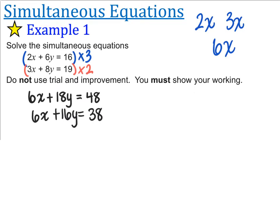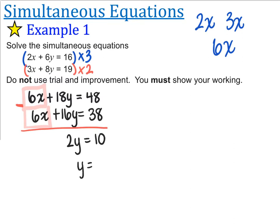Now I have 6x and 6x, and those two things are exactly the same. So I'm going to subtract the two equations. When I subtract them, 6x take away 6x is 0 — that's what I'm looking for. 18y take away 16y is 2y, and 48 take away 38 is 10. So 2y is equal to 10, so y must be equal to 5. And there is our first half of the solution: y is equal to 5.